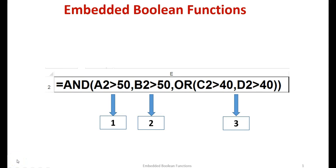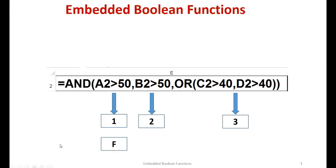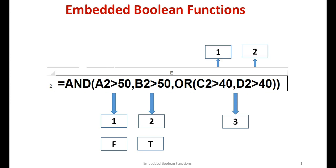Let's dissect the function we just typed in. This AND function has three arguments. The first argument, A2 greater than 50, evaluates to false. The second argument, B2 greater than 50, evaluates to true. The third argument is the OR function. The OR function has two arguments: the first argument, C2 greater than 40, evaluates to true.